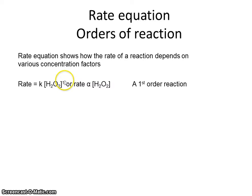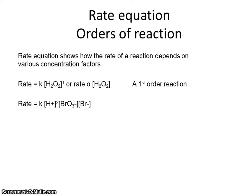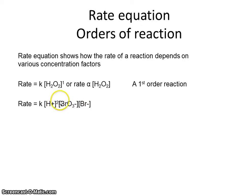Note that the number one is quite often omitted in rate equations, and you may often have to imagine it's there to clearly see that the reaction is first order. Rate equations are frequently more complex because often the rate depends on several concentration terms involving different reagents, giving a rate equation that looks more complicated.